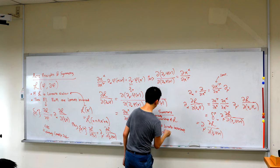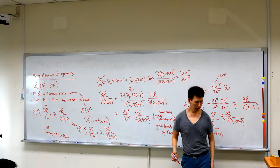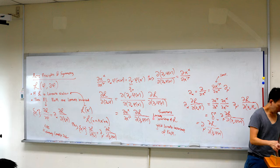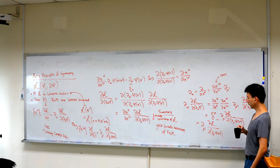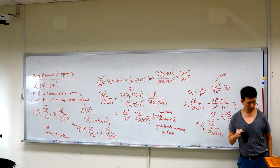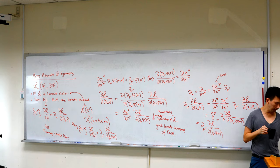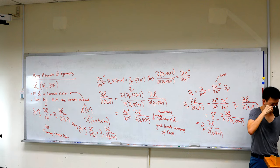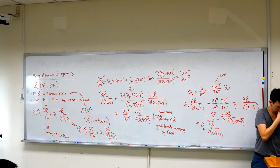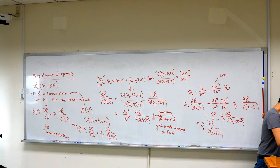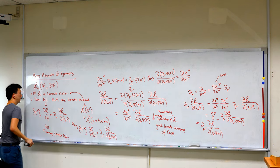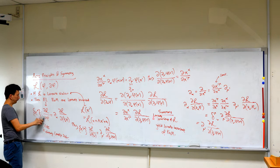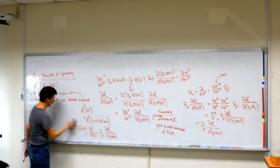Lorentz invariance of the action yields Lorentz covariance of the equations of motion, and this is ultimately what we want — at the classical level, the equations of motion are what we solve. So the Lagrangian gives you a shorthand to guarantee covariance. Generally, covariance is what we're after. Let's see it for Maxwell's equations. The scalar case was the first example, but let's do the Maxwell case and then the Dirac case.